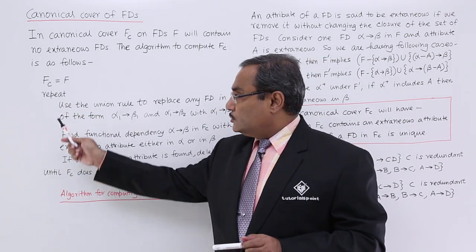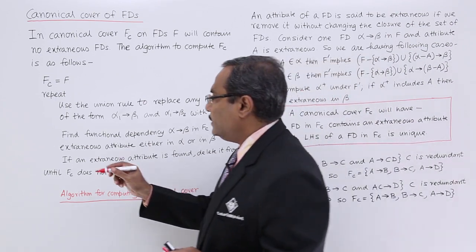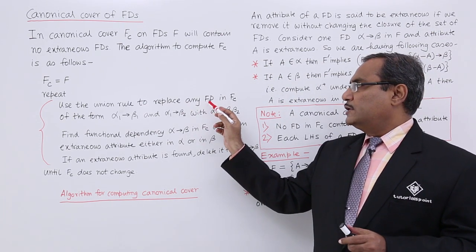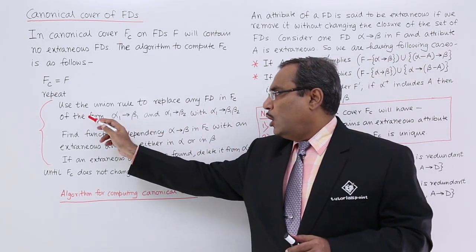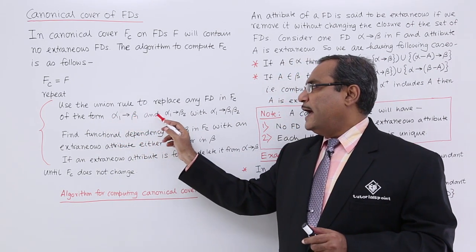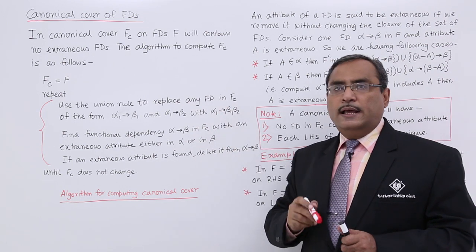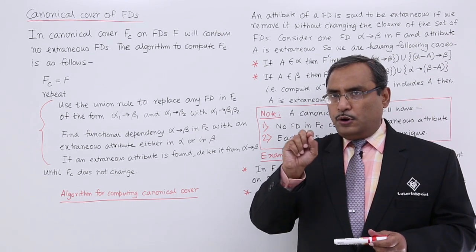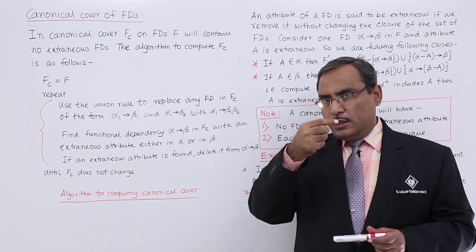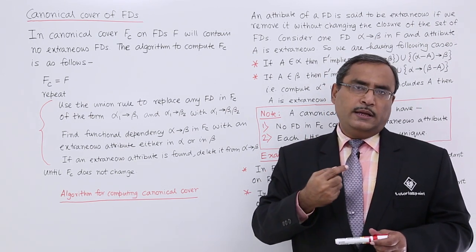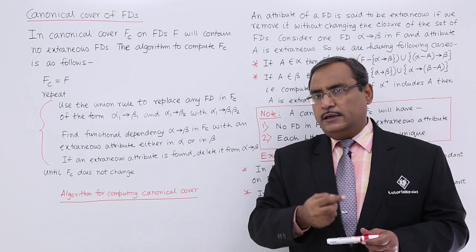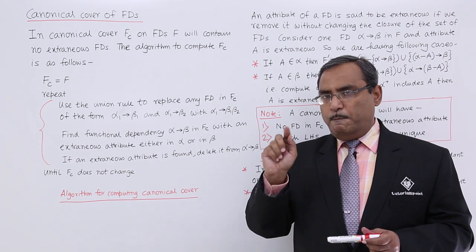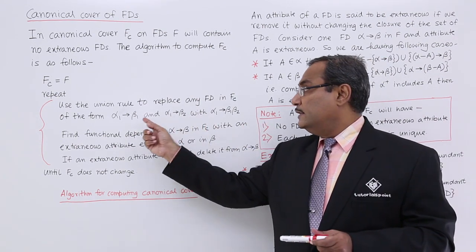Repeat the following until fc does not change. Use the union rule to replace any functional dependency within fc of the form alpha1 → beta1 and alpha1 → beta2 with alpha1 → beta1 beta2. That means we apply the union rule: if the left-hand sides of two functional dependencies are the same — both alpha1 — then we replace them with alpha1 → beta1 beta2.